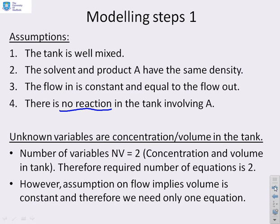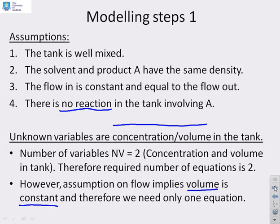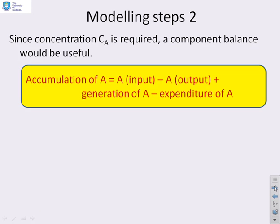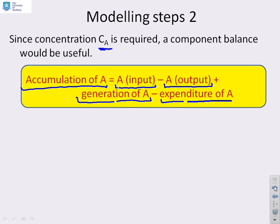We've got two variables: concentration and volume. If we assume the volume is constant — i.e., flow in equals flow out — we're left with only one variable, concentration, which means we only need one equation to solve the system. The main equation we need is a balance equation, balancing the mass of chemical A. The accumulation of A in the tank depends upon how much A you put in, how much A you take out, how much A you create in the tank, and how much A you use up.